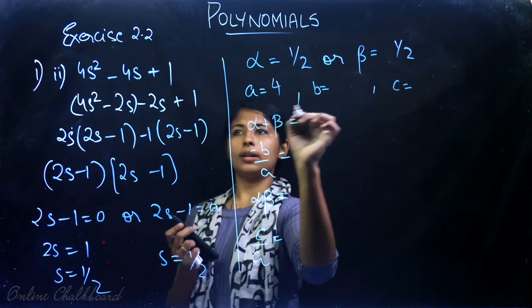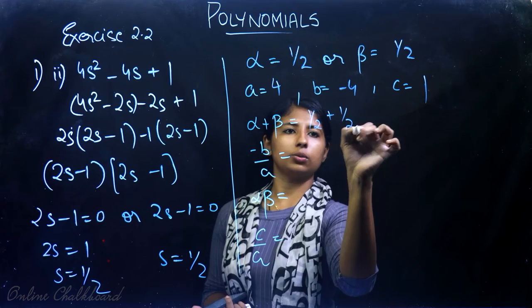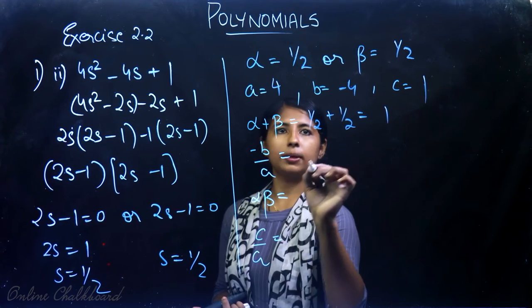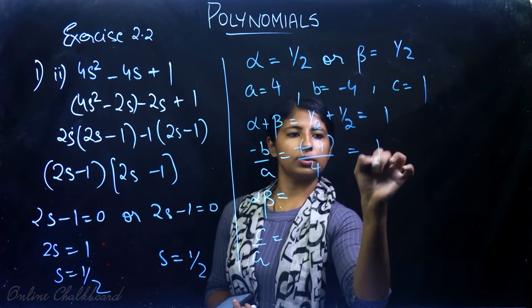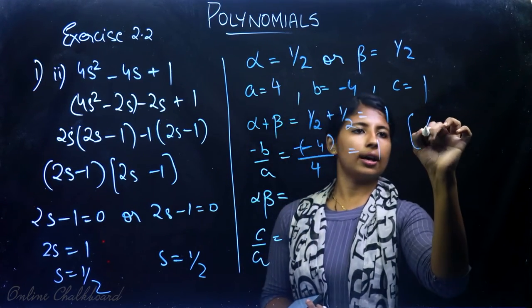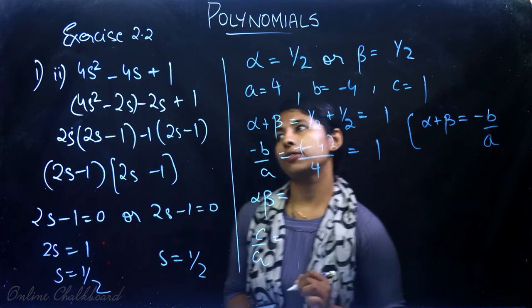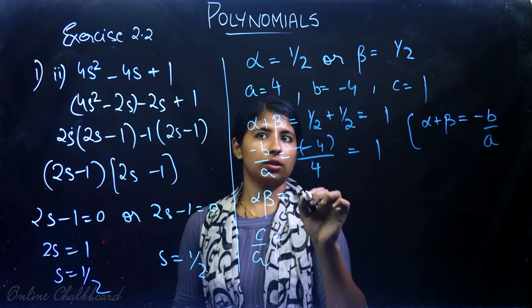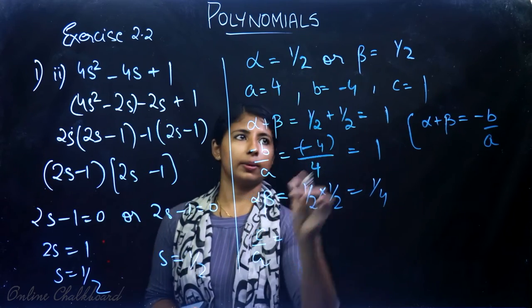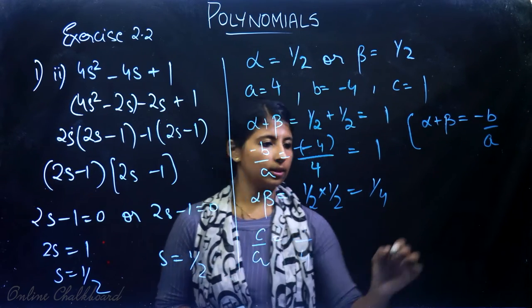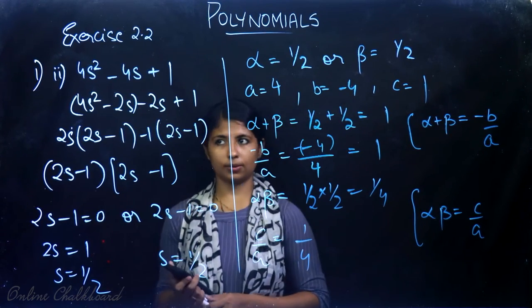Here a = 4, b = -4, c = 1. Checking: α + β = 1/2 + 1/2 = 1, and -b/a = -(-4)/4 = 1. Equal. Now α·β = 1/2 × 1/2 = 1/4, and c/a = 1/4. Equal. So the sum of zeros equals -b/a and the product of zeros equals c/a, verifying the relation.